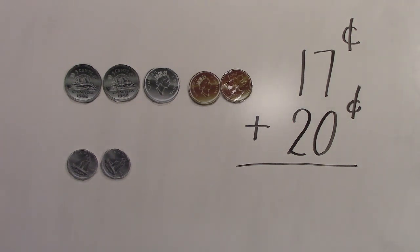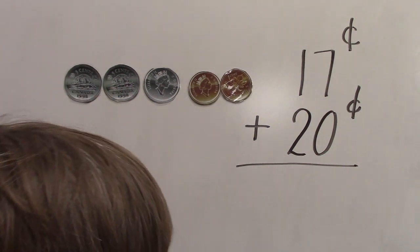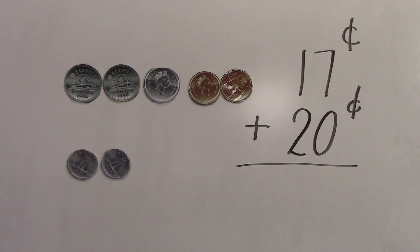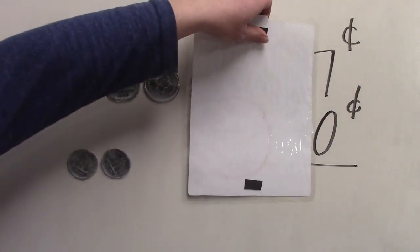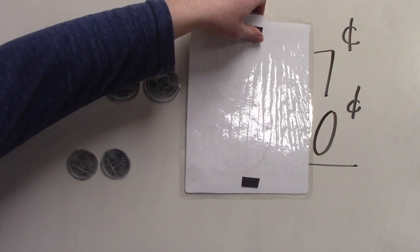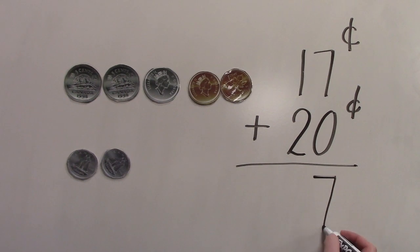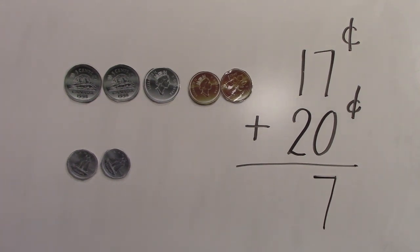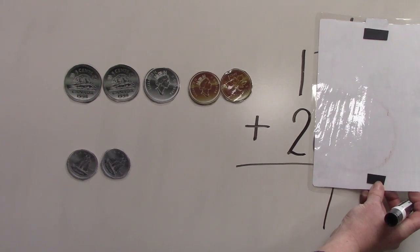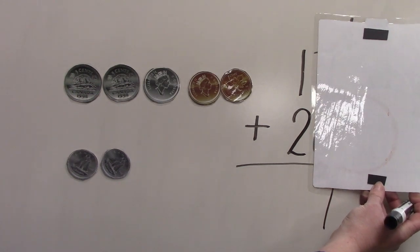To begin with, we need to count just the money on one side. And we're going to count just the ones place. Seven plus zero. What is seven plus zero? That's correct. It's seven. And now we're going to count the tens place. One plus two. What is one plus two? That's correct. It's three. So when we add 17 plus 20, our answer is 37 cents. Great job.